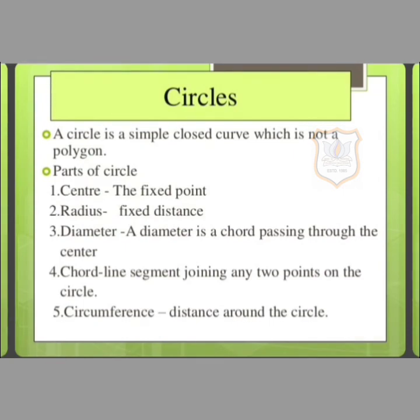Fourth part is chord. A line segment joining any two points on the circle is called a chord. Fifth is circumference, which is distance around the circle and it is also known as the perimeter.